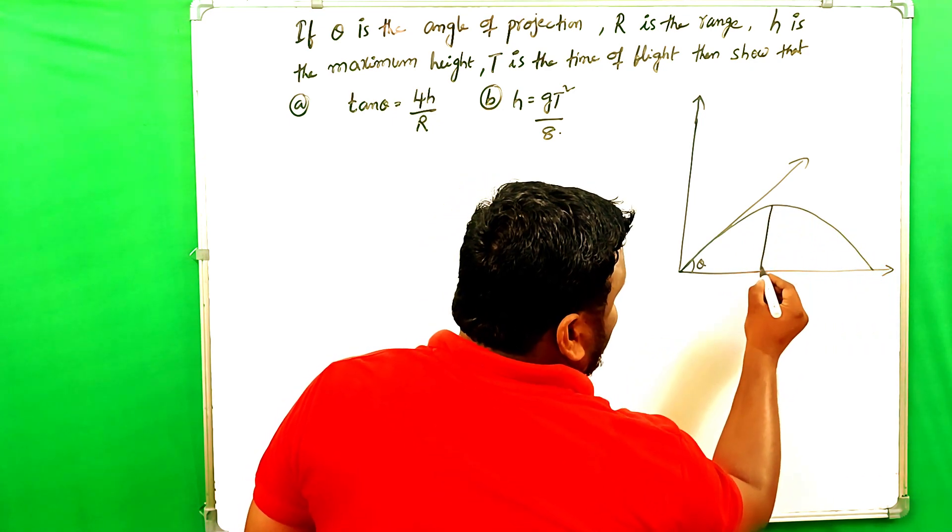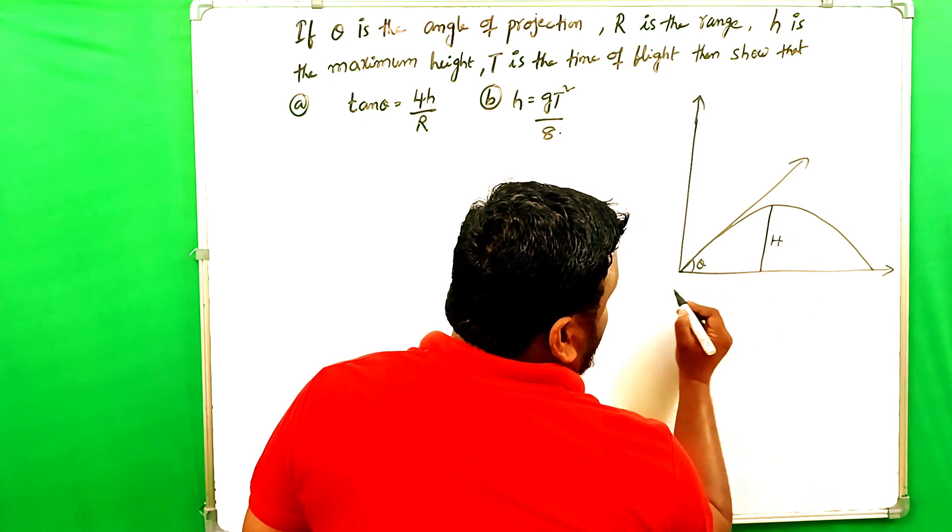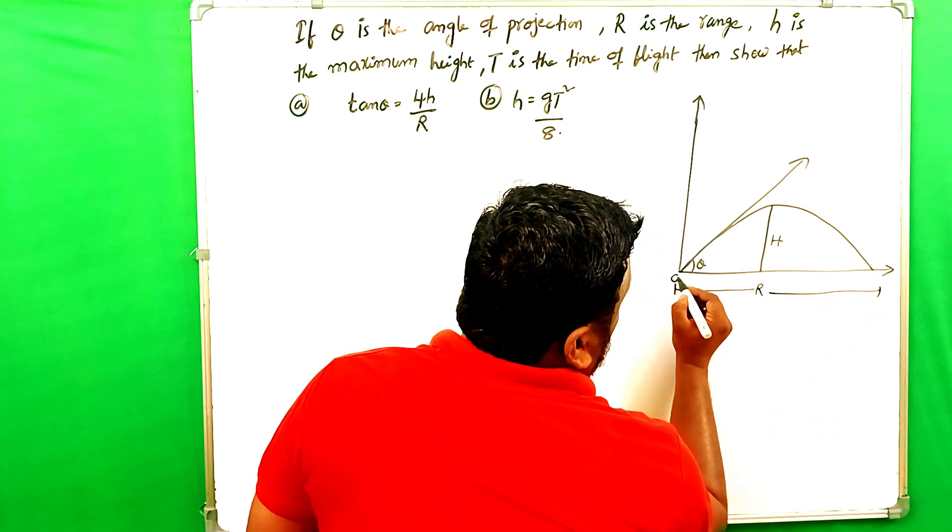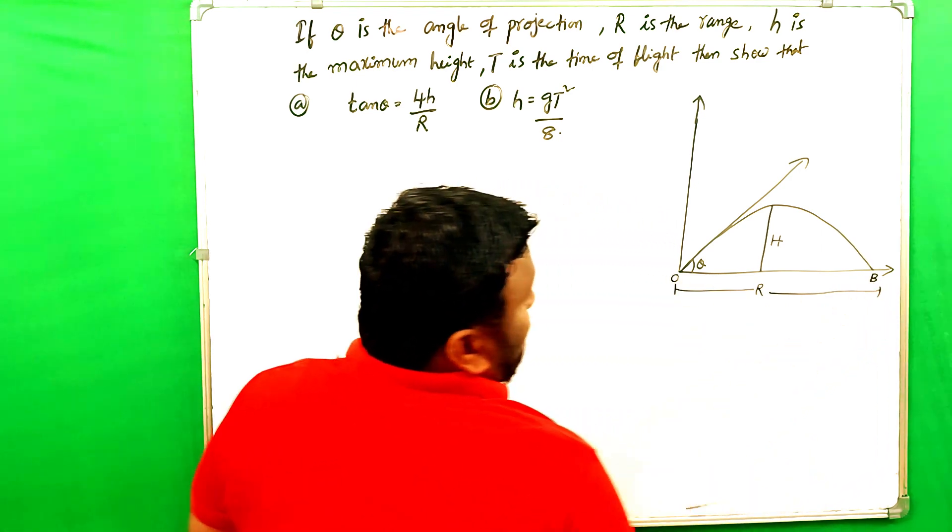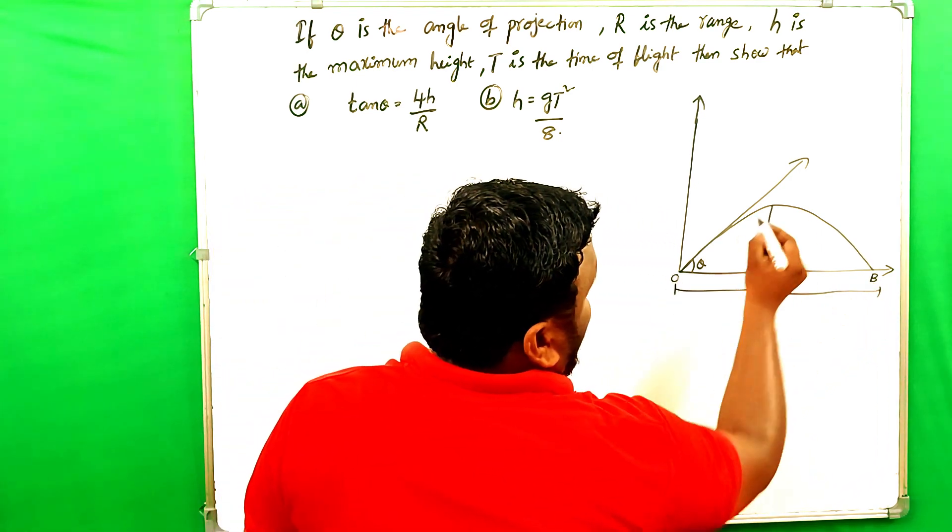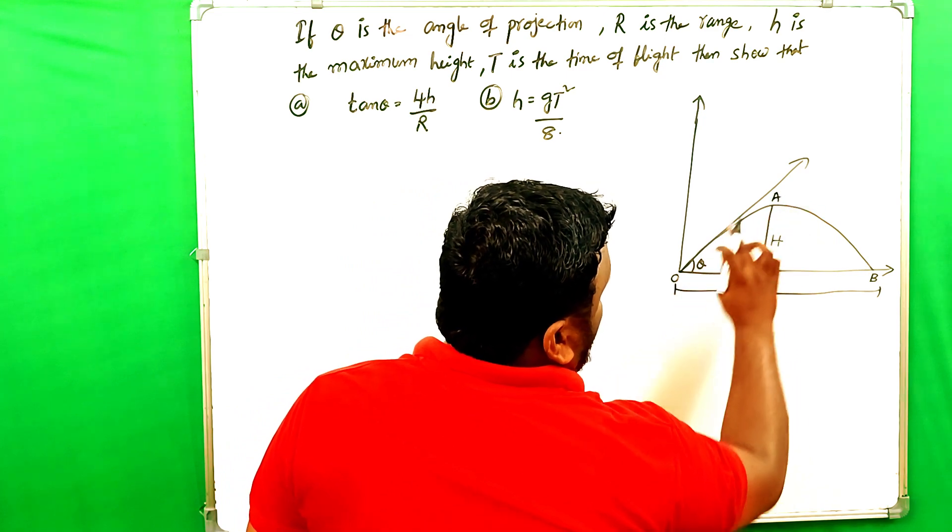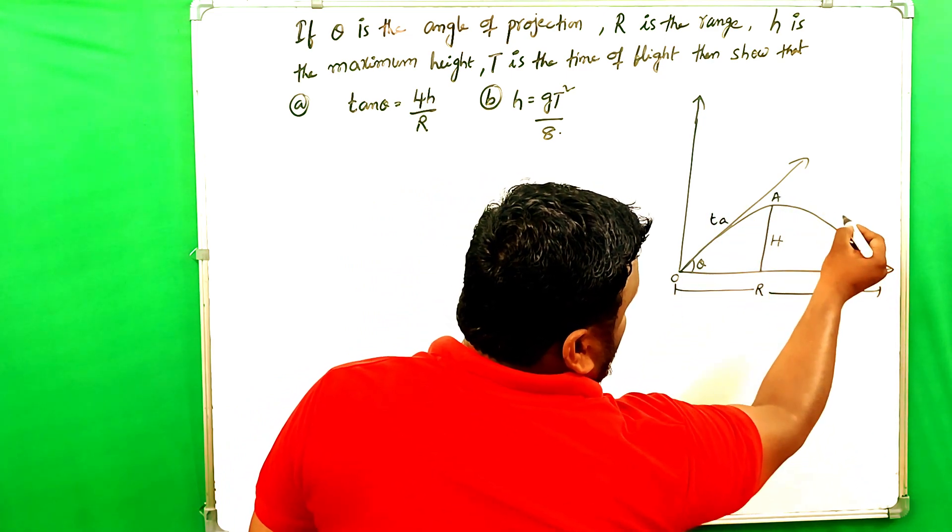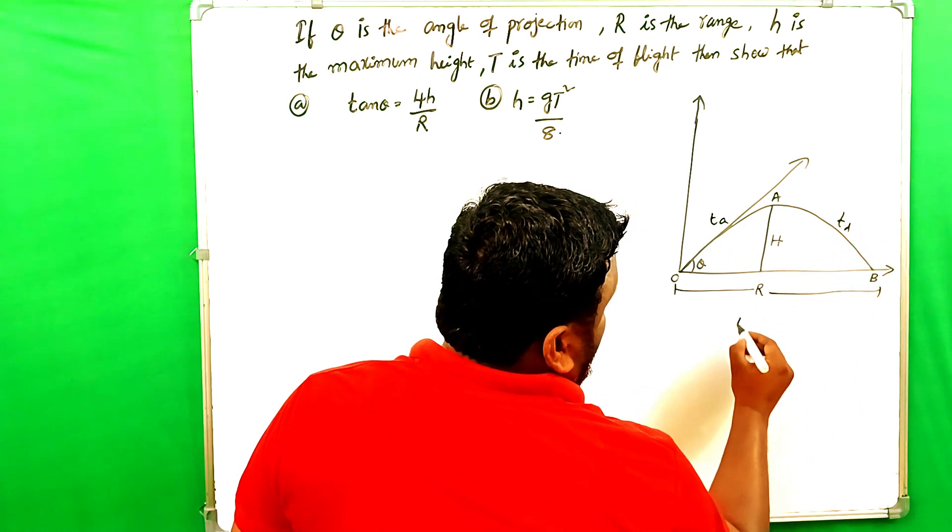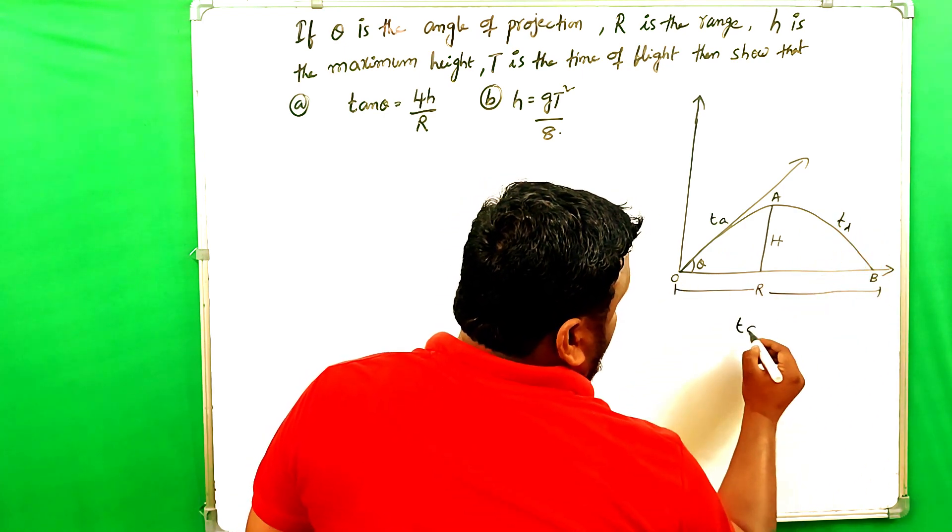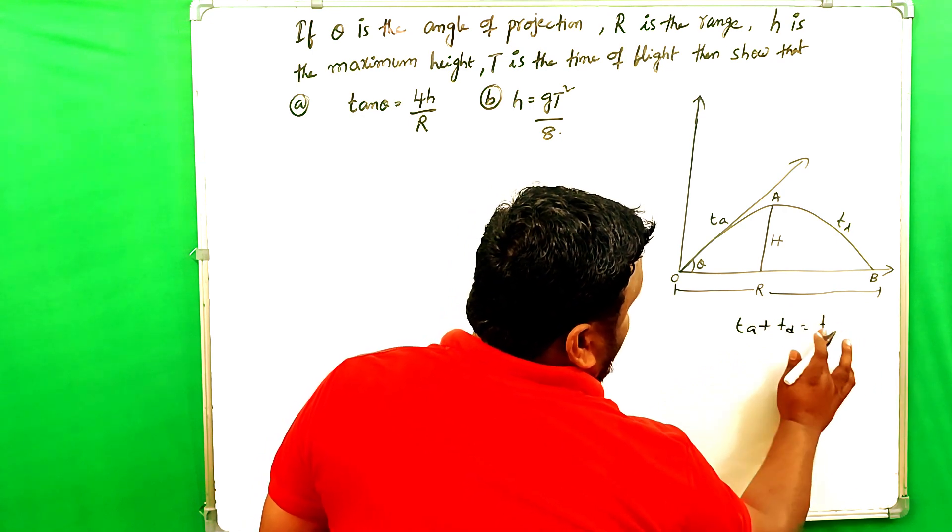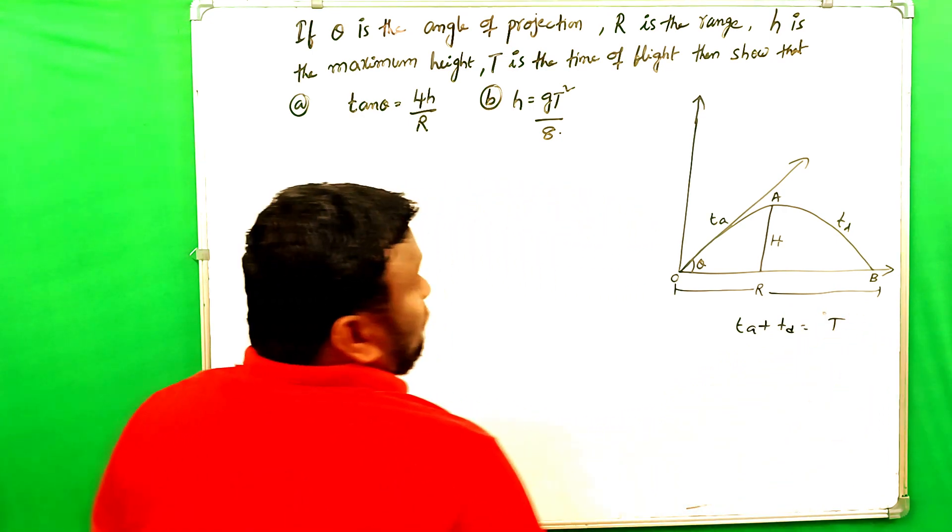This is the maximum height, and this is the range. From O to B, that is the range. And here, O A B. O to A, time of ascent. A to B, time of descent. And from O to B, T A plus T D. That is time of flight.